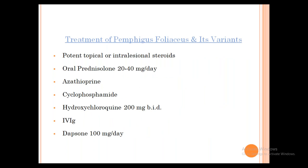Treatment of Pemphigus Foliaceus and its variants: it is not as aggressive as Pemphigus Vulgaris and can be treated with topical or intralesional steroids. Sometimes oral steroids are required, but not at the high 1.5–2 mg/kg dose — 20 to 40 mg may be sufficient. For difficult cases, immunosuppressants like Azathioprine or Cyclophosphamide may be required.